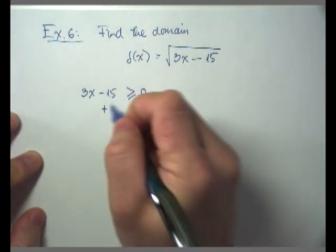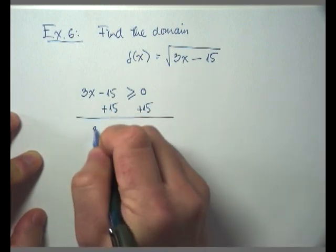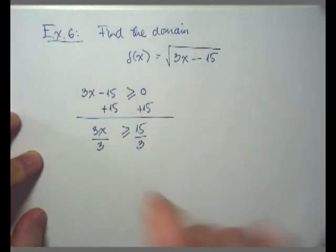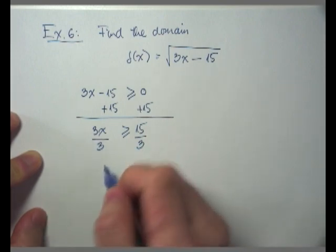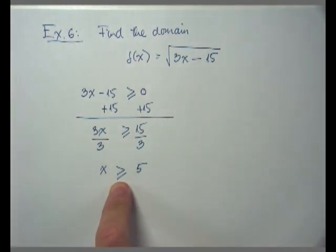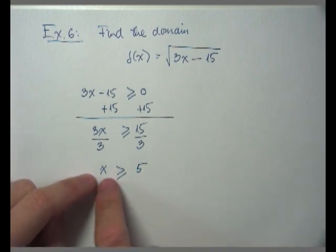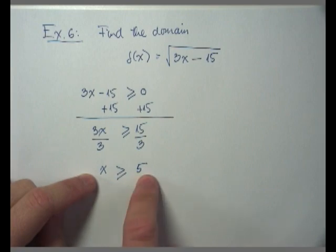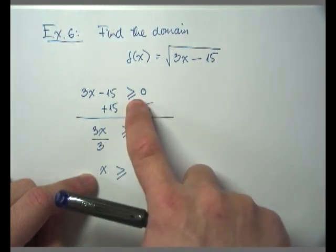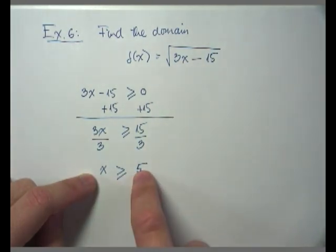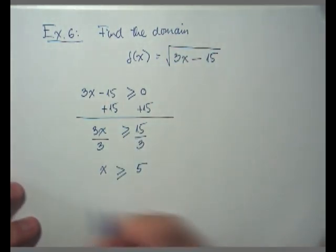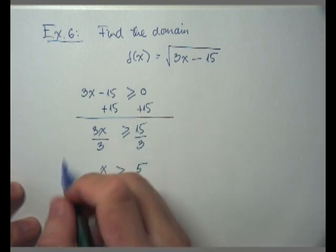Solving that inequality, I add 15 to both sides, giving me 3x greater than or equal to 15. Dividing both sides by 3 — no need to flip the inequality since we're dividing by a positive number — I end up with x greater than or equal to 5. This final inequality tells me that any x value of 5 or higher will cause the quantity 3x minus 15 underneath the square root to be greater than or equal to zero, making it non-negative. So this is our domain.